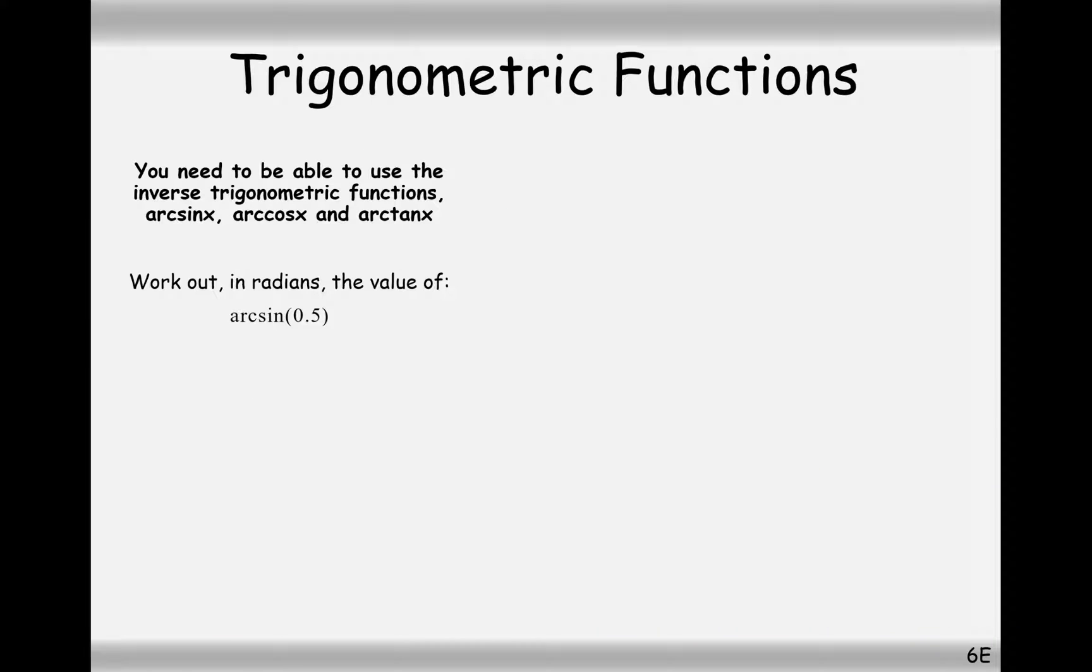Right, so let's get on to doing some work with using these functions. Work out in radians the value of arc sine 0.5. Arc sine means sine inverse. So you can just do on your calculator sine minus 1, 0.5, and maybe you've remembered it, pi by 6.